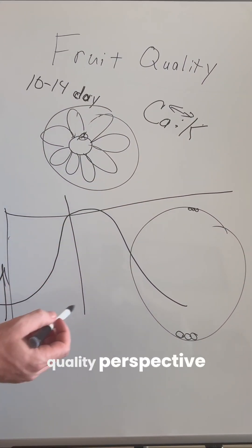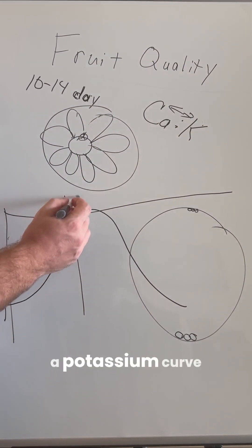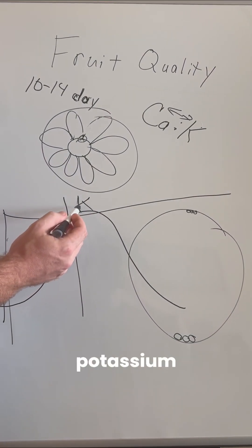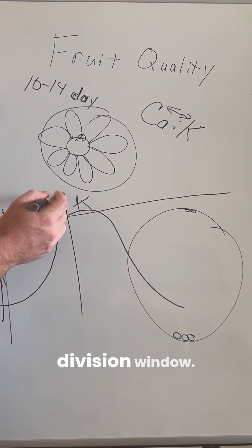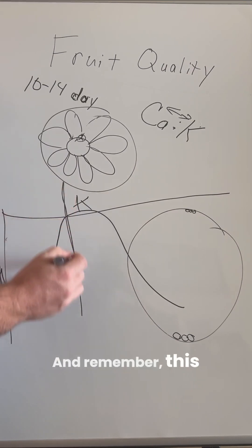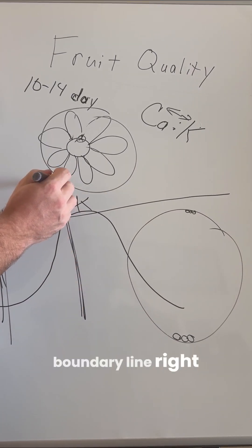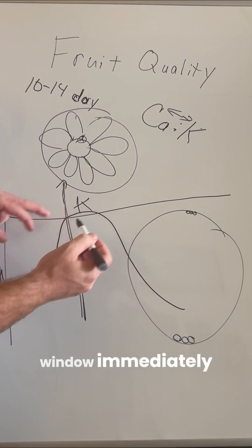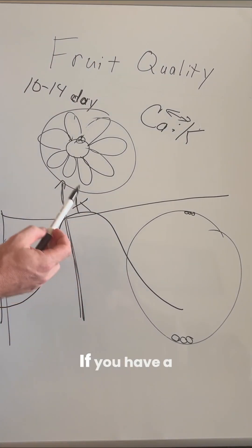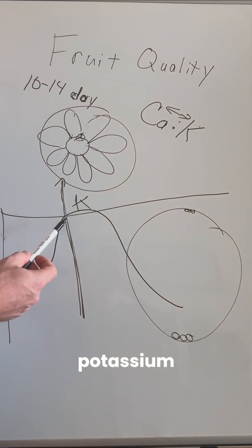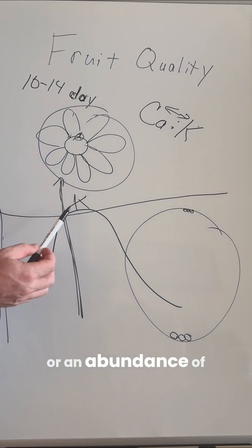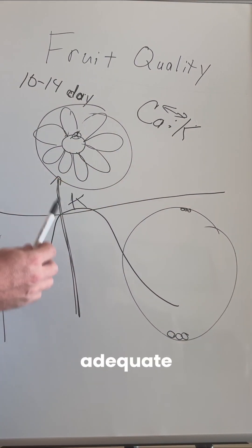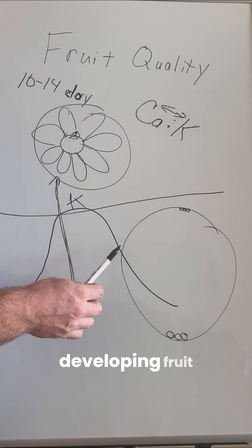One of the most challenging things from a fruit quality perspective is having a potassium curve with a surplus of available potassium during the cell division window — the 10 to 14 day period immediately after pollination. If you have a peak of available potassium at this point, it will prevent adequate levels of calcium from moving into the developing fruit.